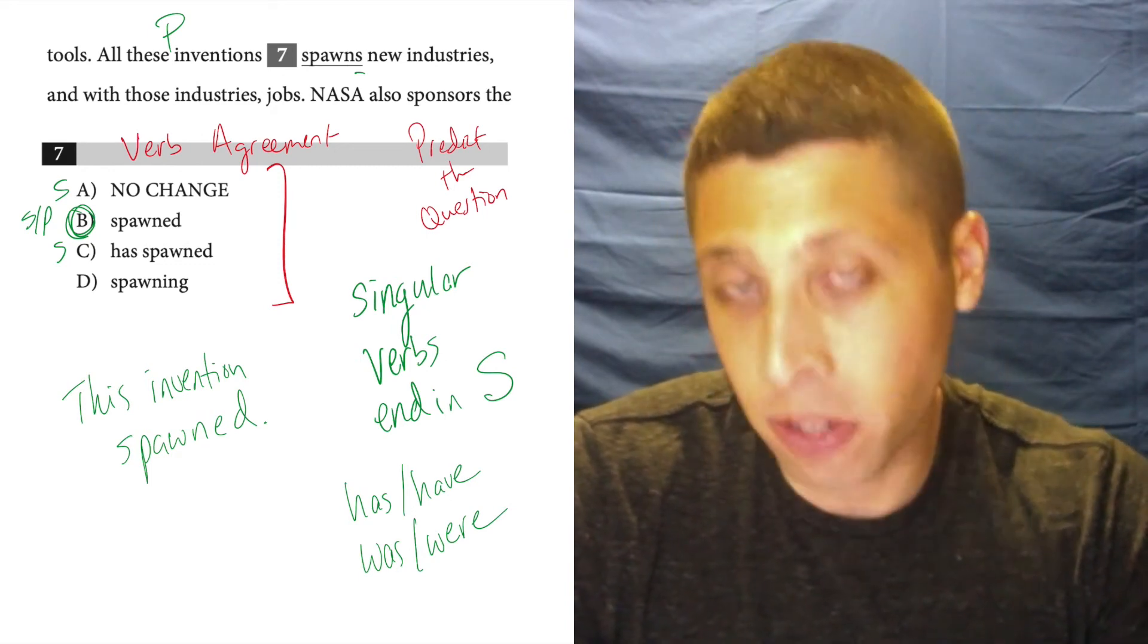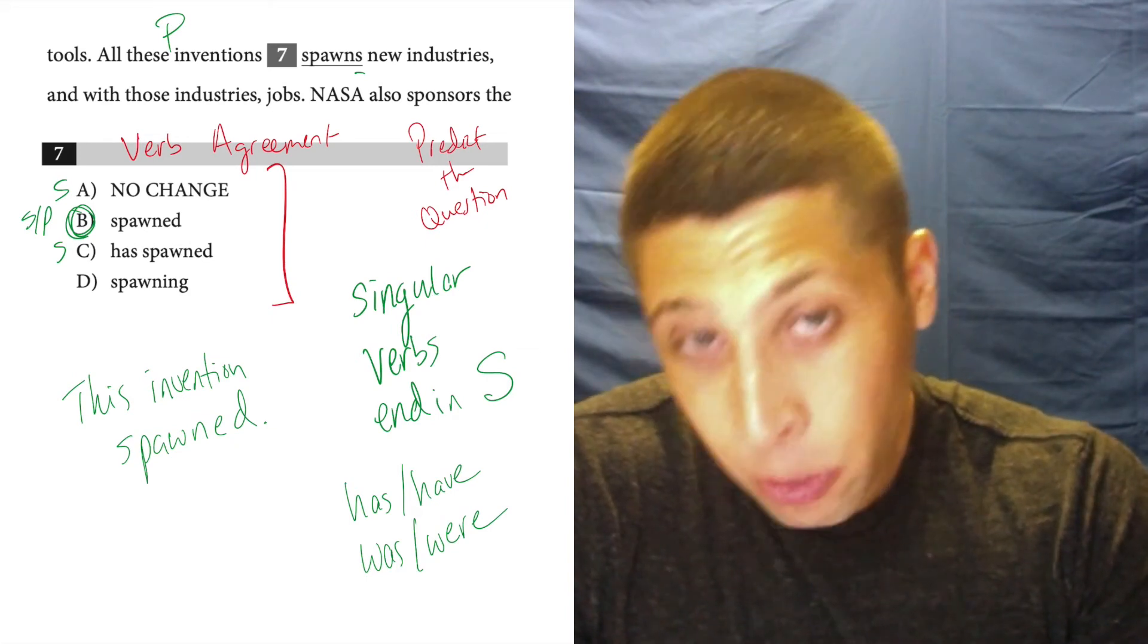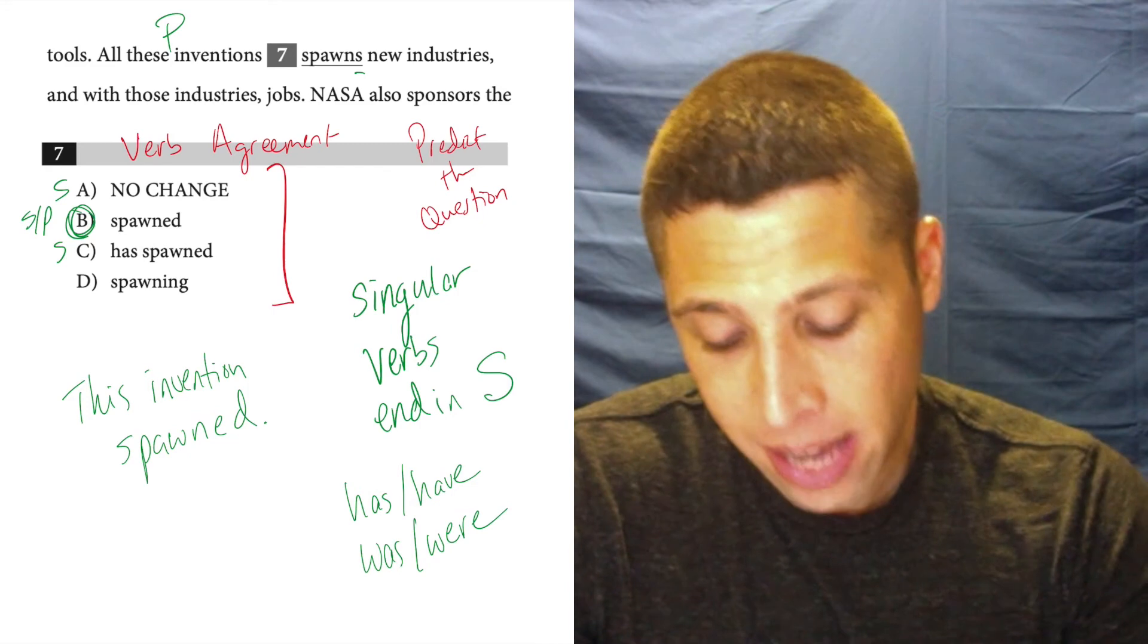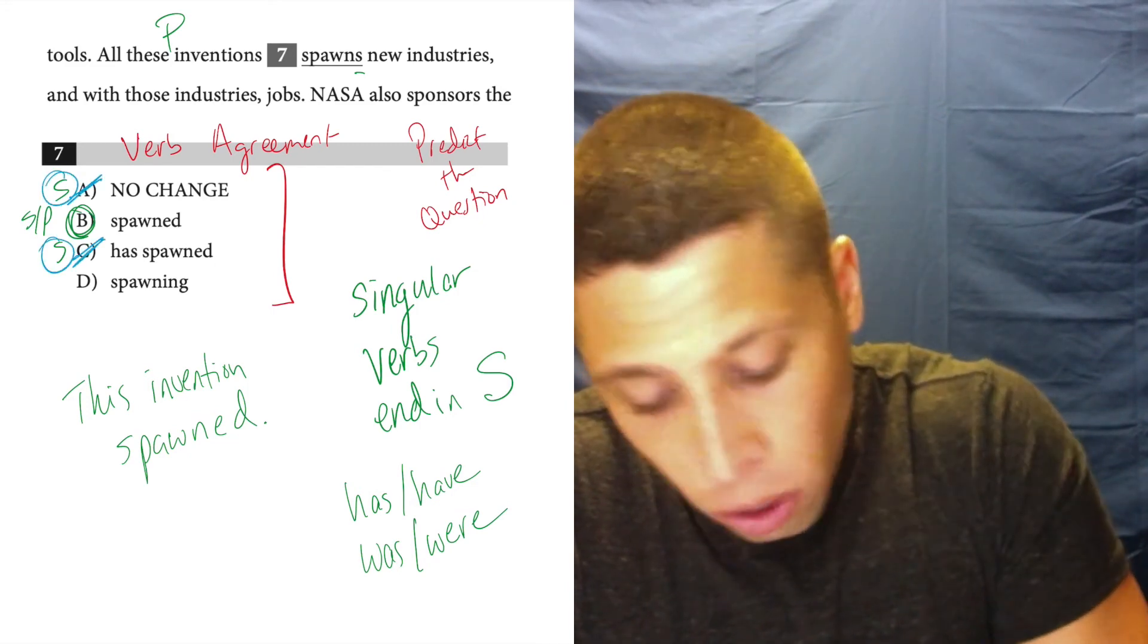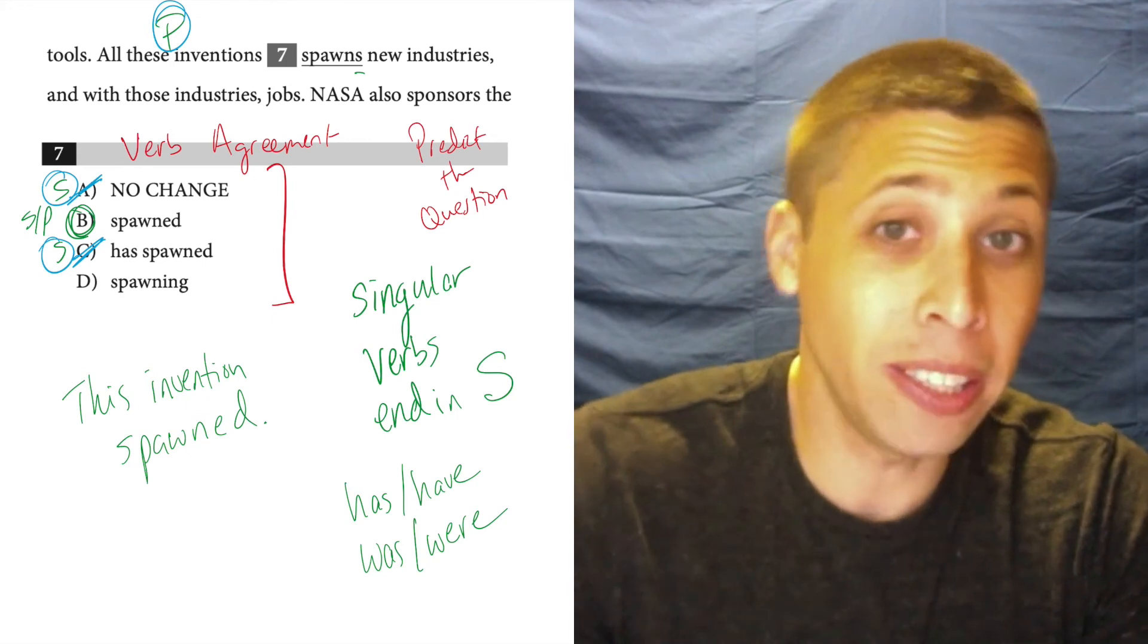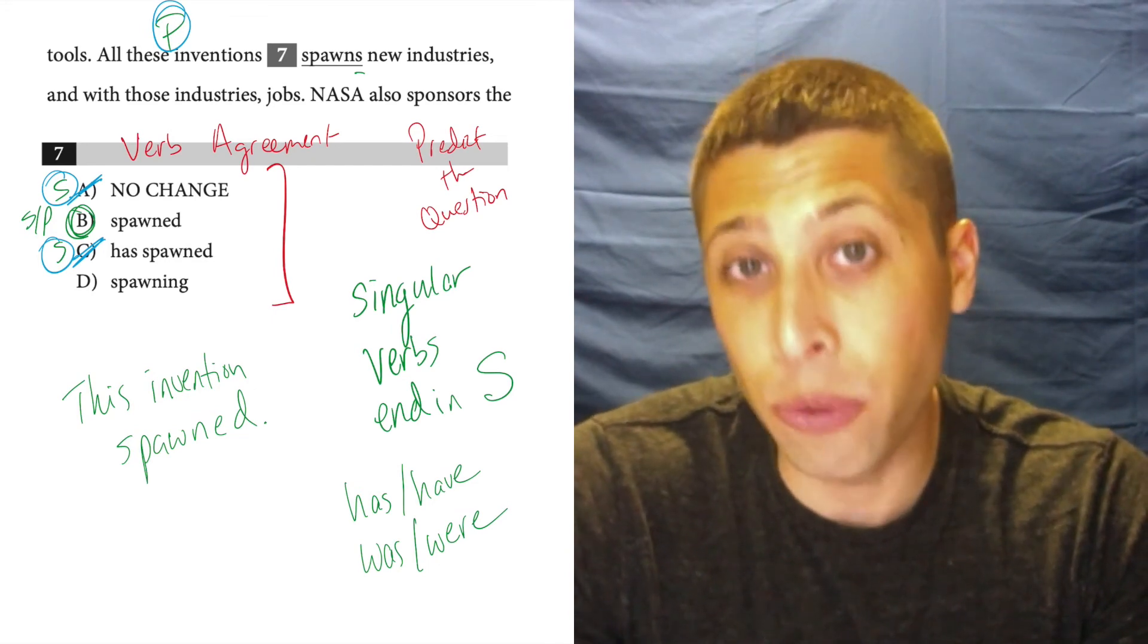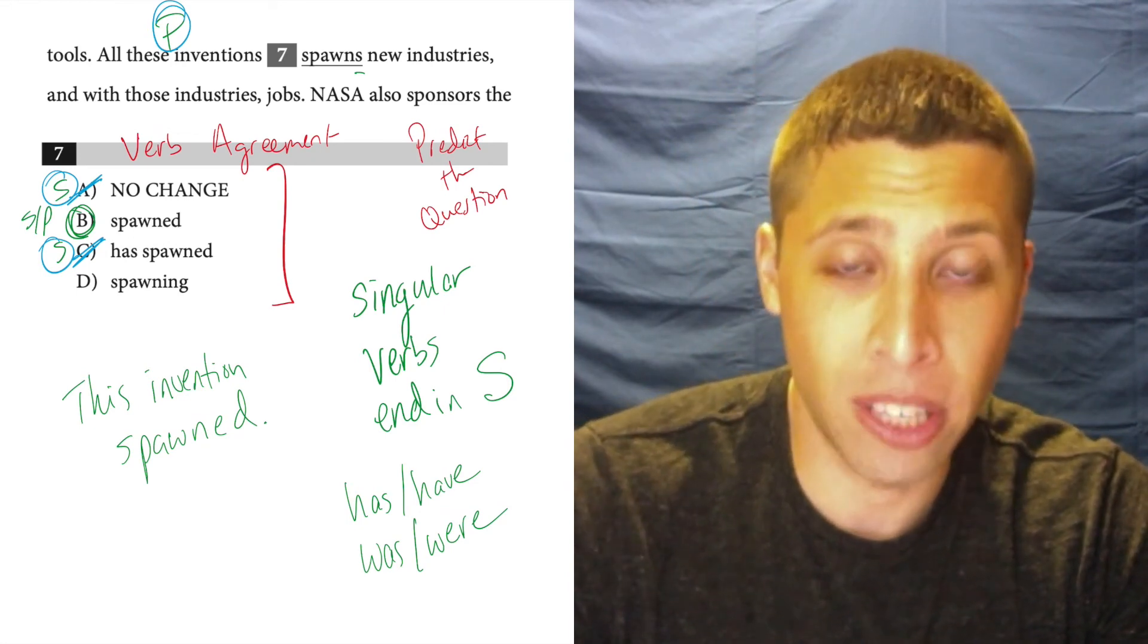So the reason this is so important is if we're thinking about the tense, we might get this right. Maybe that tense feels right to us. But the real reason that it has to be the past tense is that the present tenses are wrong. The singulars don't match with the plural. And so that helps us because a lot of times with tense, we don't really know. It could go either way. And so we need another reason to decide which choice is best. And the verb agreement reason is usually cut and dry.